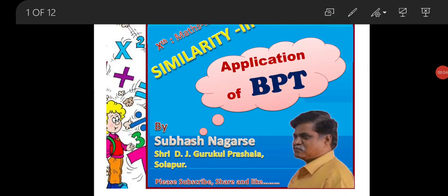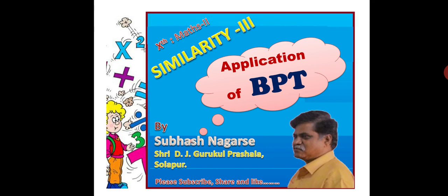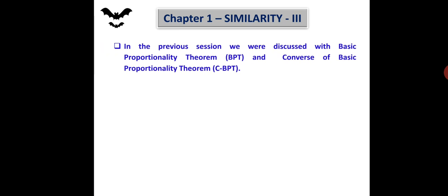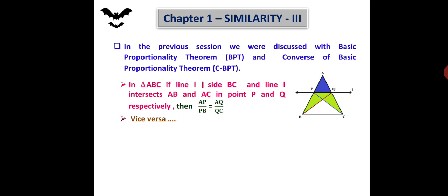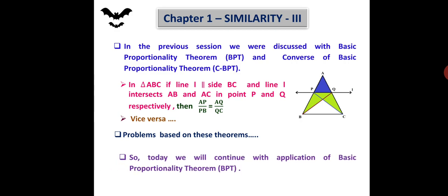Hello, welcome friends to this online session. In the previous session, Similarity Part 2, we discussed the Basic Proportionality Theorem (BPT) and the Converse of Basic Proportionality Theorem (CBPT). In triangle ABC, if line L is parallel to side BC and intersects AB and AC at points P and Q respectively, then AP/PB = AQ/QC, and vice versa. We also solved problems based on these theorems. Today we will continue with applications of the Basic Proportionality Theorem.